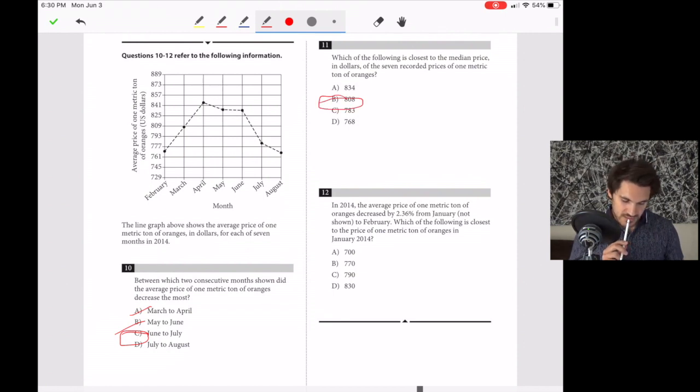Number twelve. In 2014, the average price decreased by 2.36 percent. Which is closest to the price in January 2014? The price decreased from January to February. In February it's about 765, so it should have been a little bit higher than that. That looks like about 770, so B is our answer.